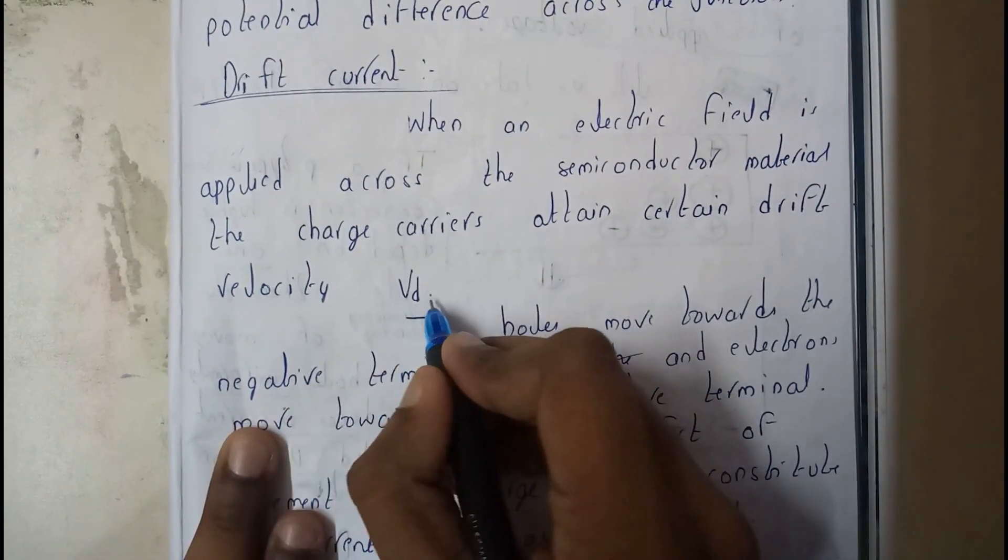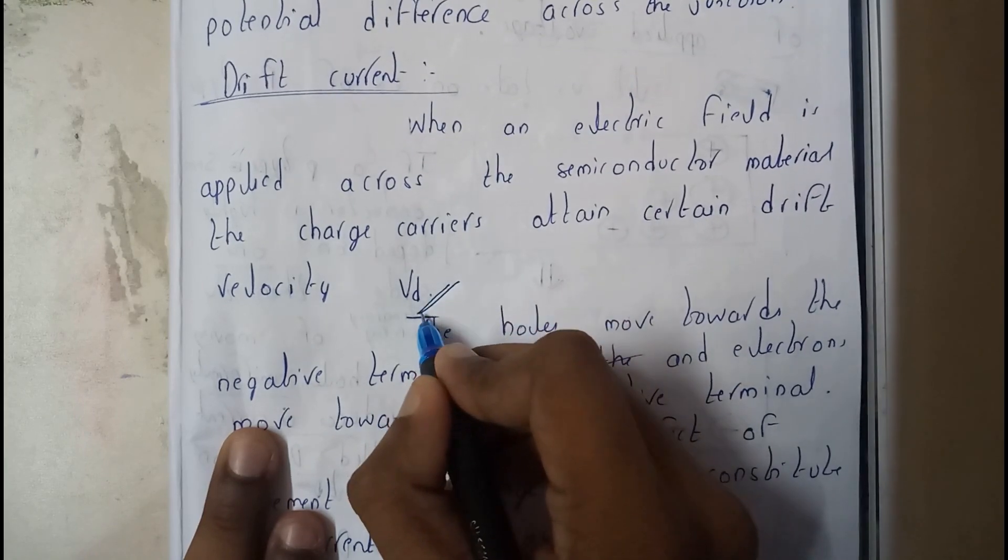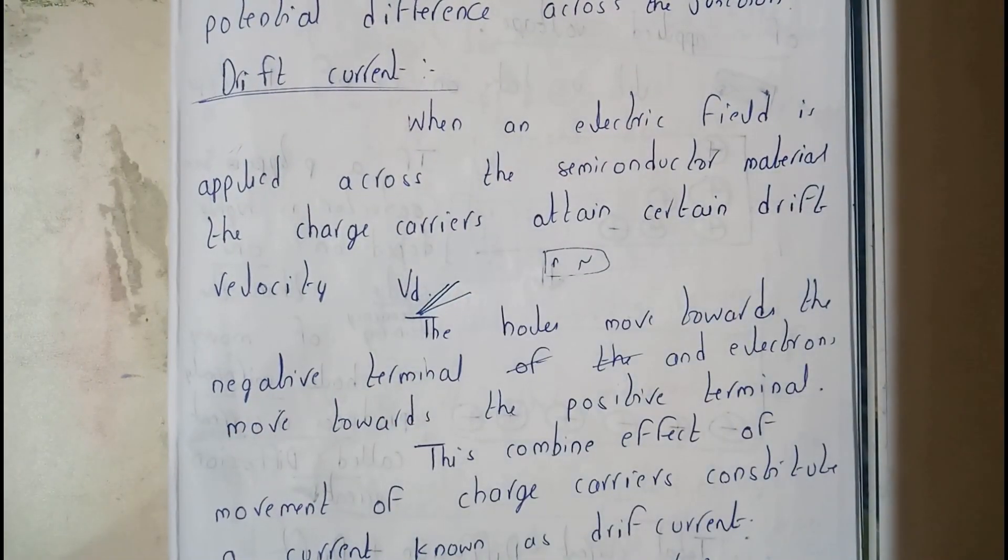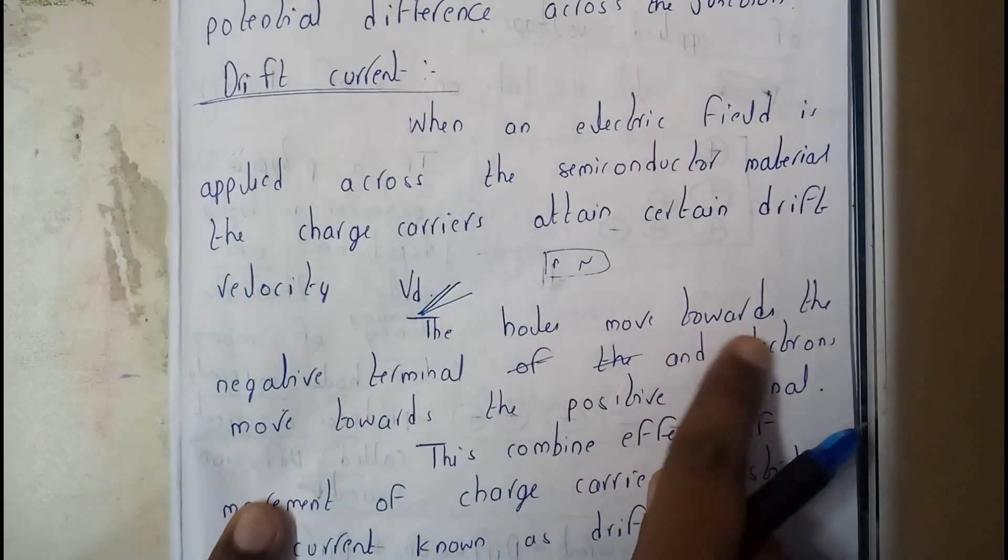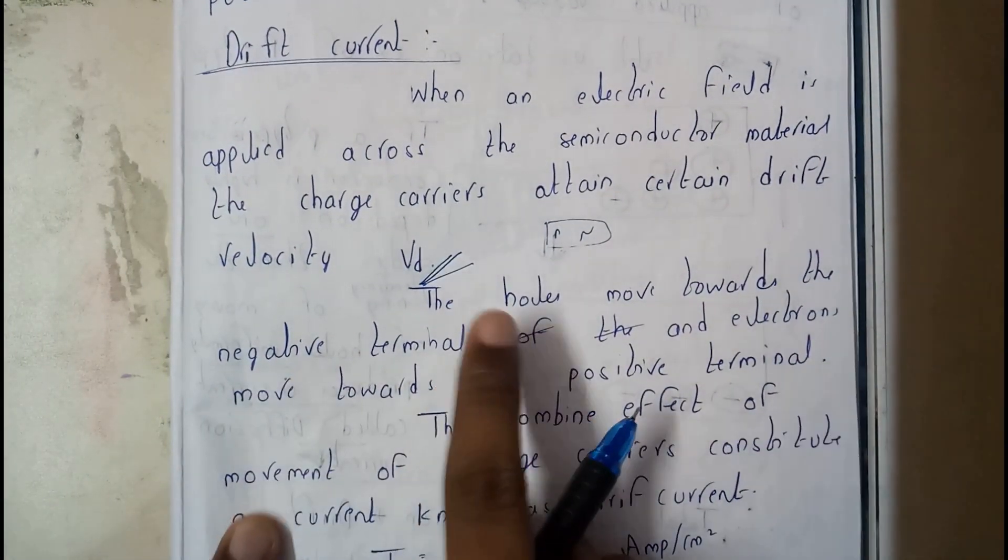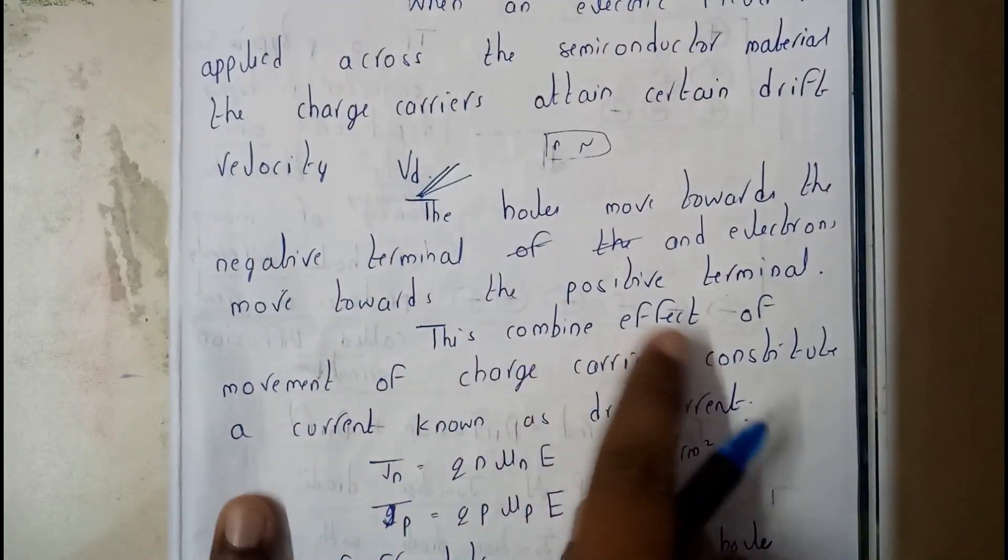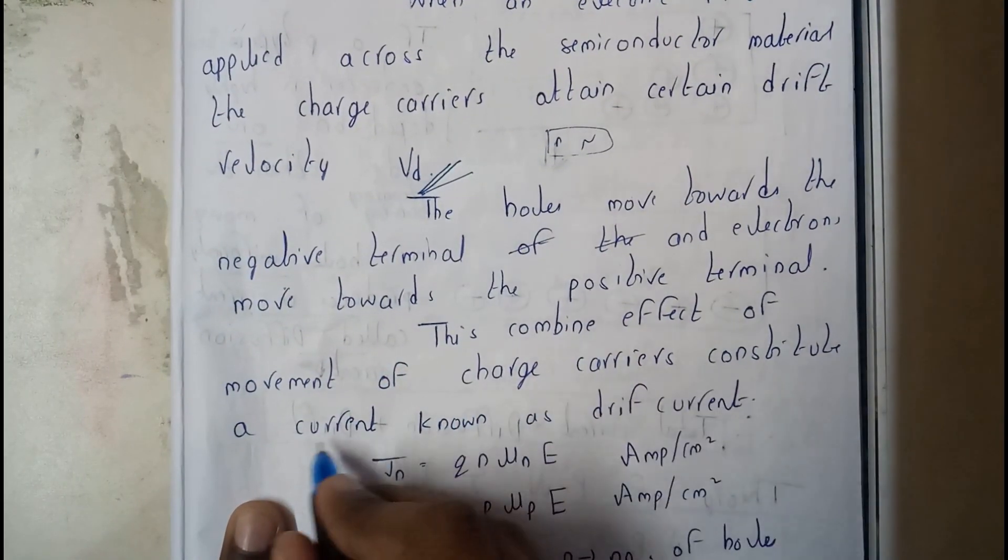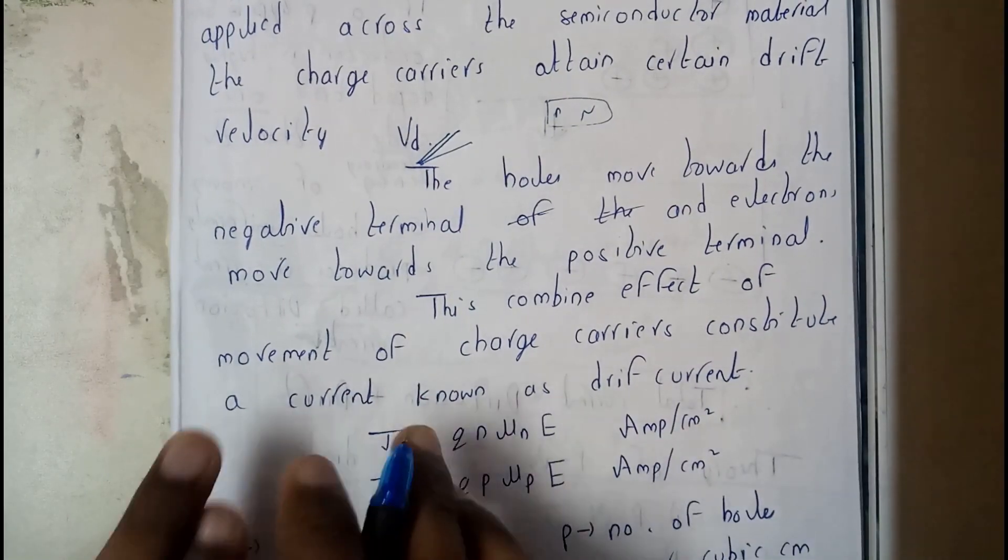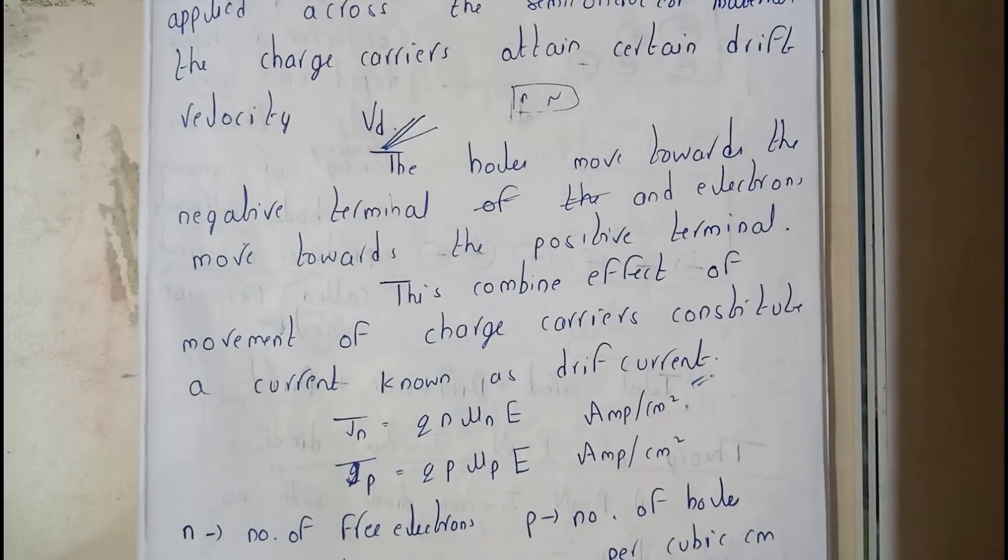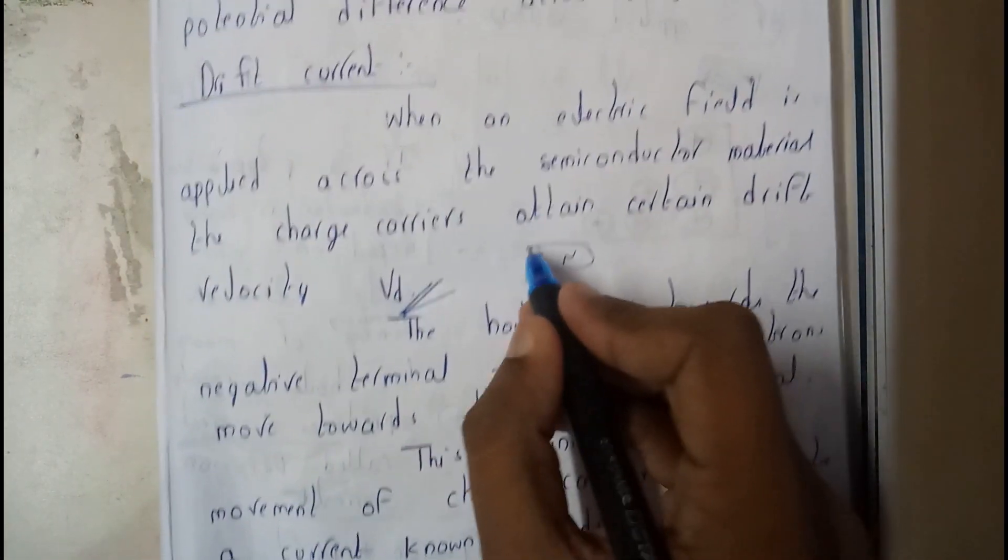When an electric field is applied across the semiconducting material, the charge carriers attain certain drift velocity Vd. The holes move towards the negative terminal and electrons move towards the positive terminal.